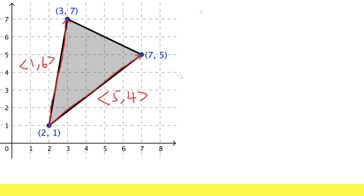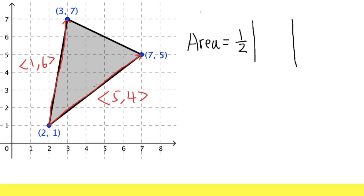Now we can use the determinant to figure out the area of this triangle. The area is equal to one-half times the determinant, because if you just do the determinant you actually get the area of a parallelogram — you get another piece like this — so you just want half of it. So what you do is put the vector components into the matrix: five, four, and then one, six. The order doesn't really matter because of the property of the determinant.